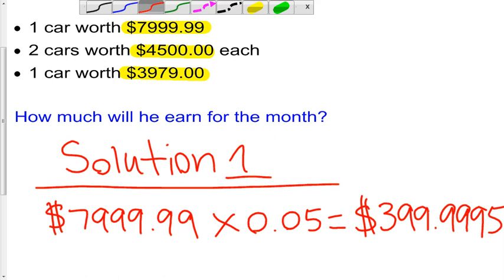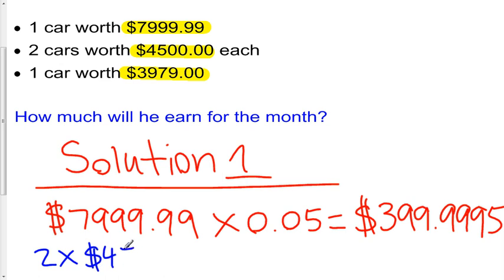So on his next sale here, he got these two cars here worth $4,500 each. So rather than calculating the commission on each of those cars individually, I'm simply just going to say, well, there were two of them at $4,500.